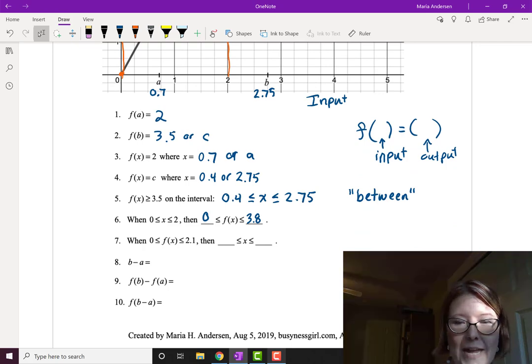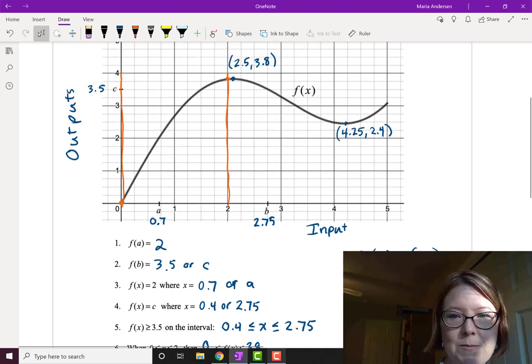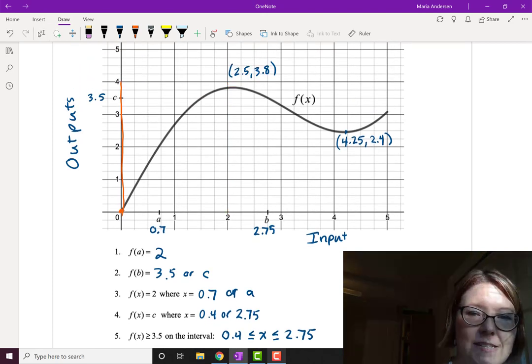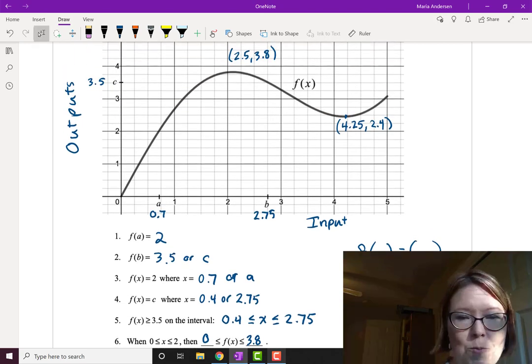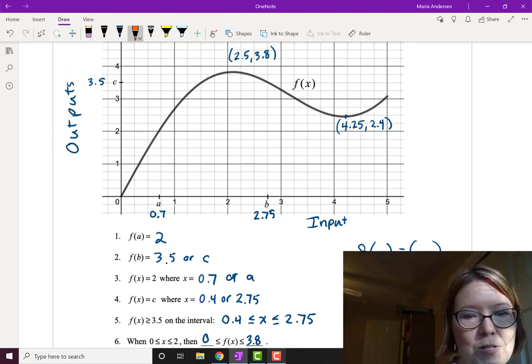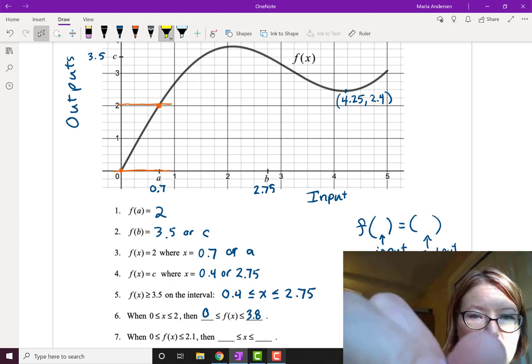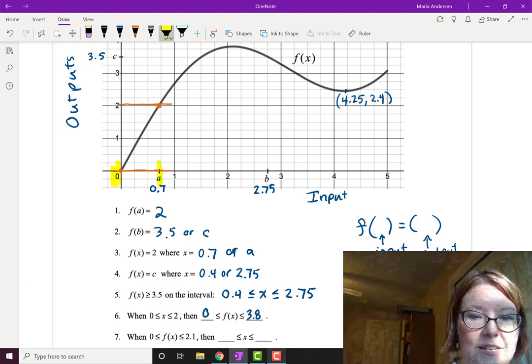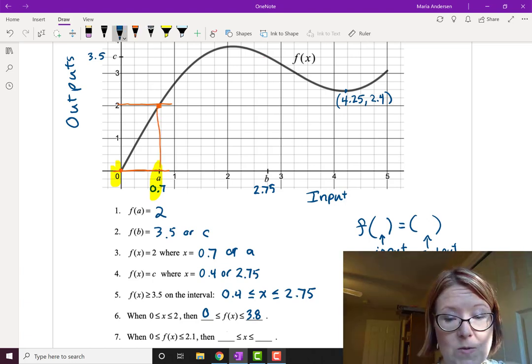How about when f of x is between 0 and 2.1? Again, let me go back to my graph and do a little bit of erasing. When f of x is between 0 and 2.1, that's when the output values are between 0 and 2.1. We have x values that are between 0 and about 0.7. That's correlating directly down to the x-axis. The x values run between 0 and about 0.7.